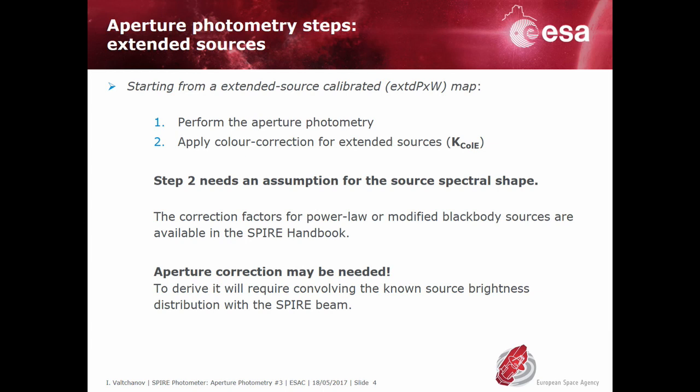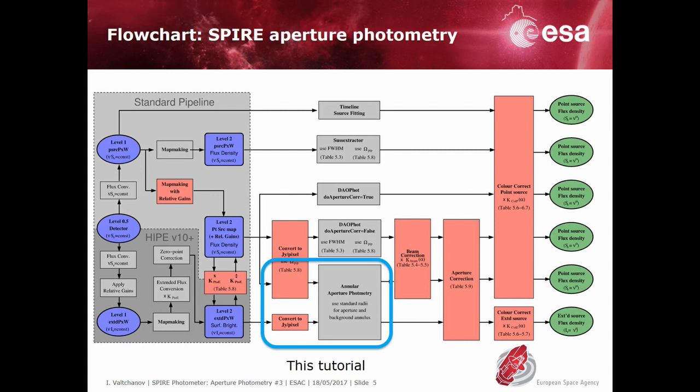For sources much more extended than the beam and for large apertures, the aperture correction should be close to one. For the general case, the user has to convolve the known source brightness distribution with the SPIRE beam and derive the correction for the selected aperture.